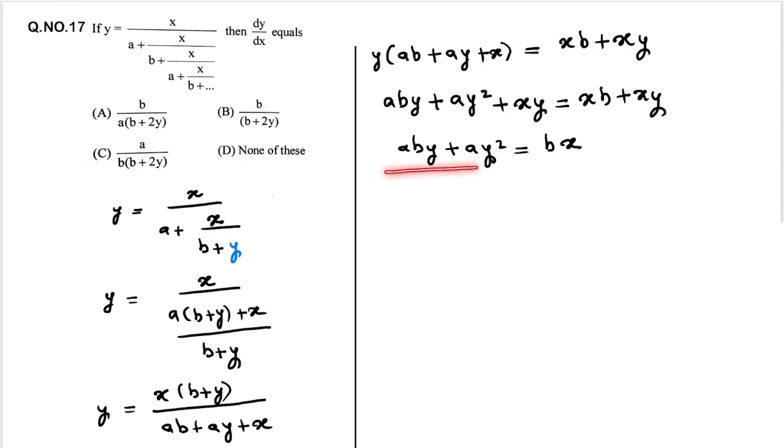Now differentiating both sides with respect to x, then we will get this: ab(dy/dx) and this is a(2y)(dy/dx). If you differentiate right hand side then we will get this as b.